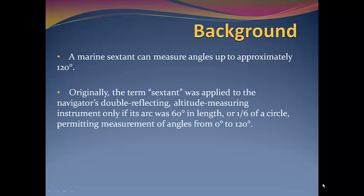Originally, the term sextant was applied to the navigator's double-reflecting altitude-measuring instrument only if its arc was 60 degrees in length or one-sixth of a circle, permitting measurements of angles from 0 degrees to 120 degrees.